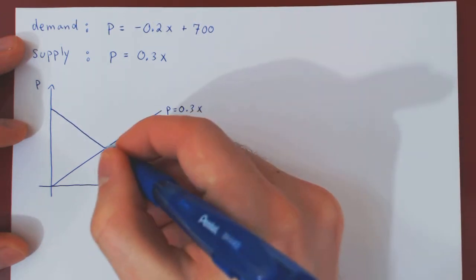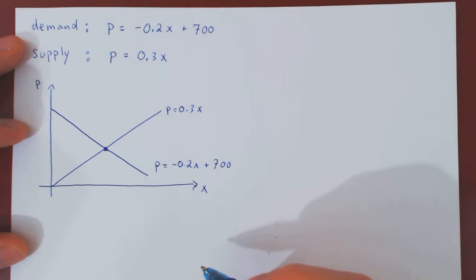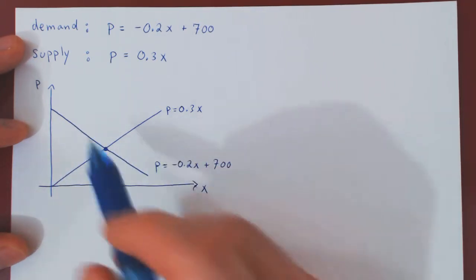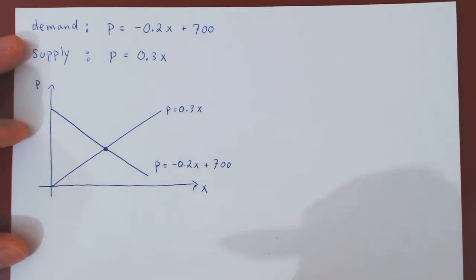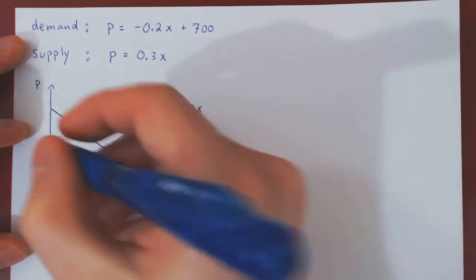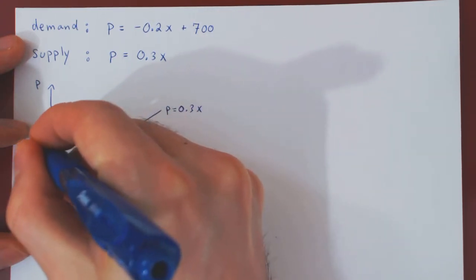The equilibrium point is the point where the demand function and the supply function both intersect. We'll call this value of x, x0, and this value of p, p0.